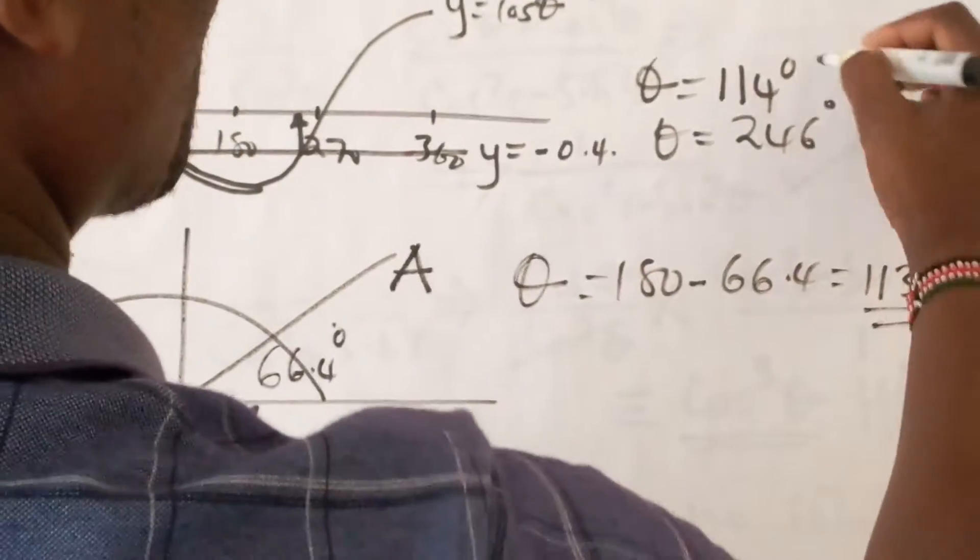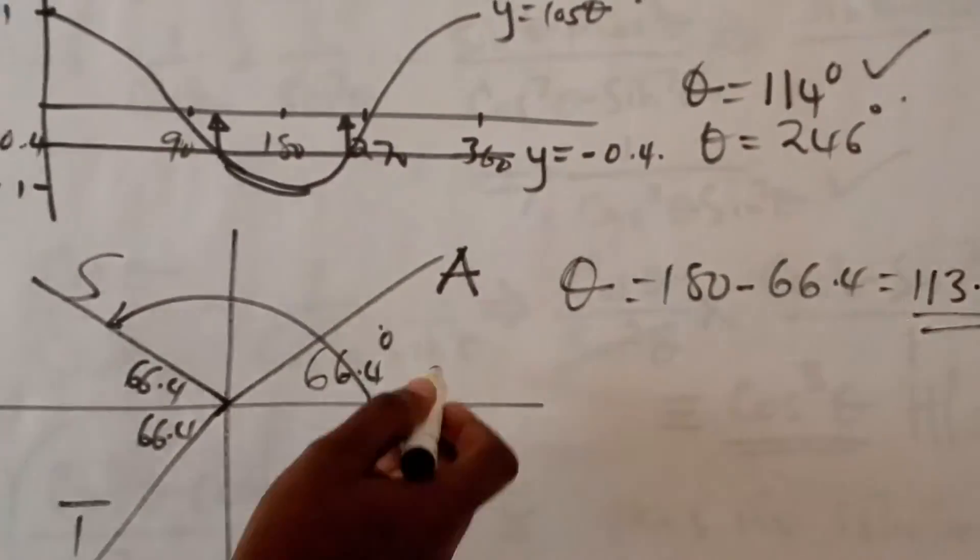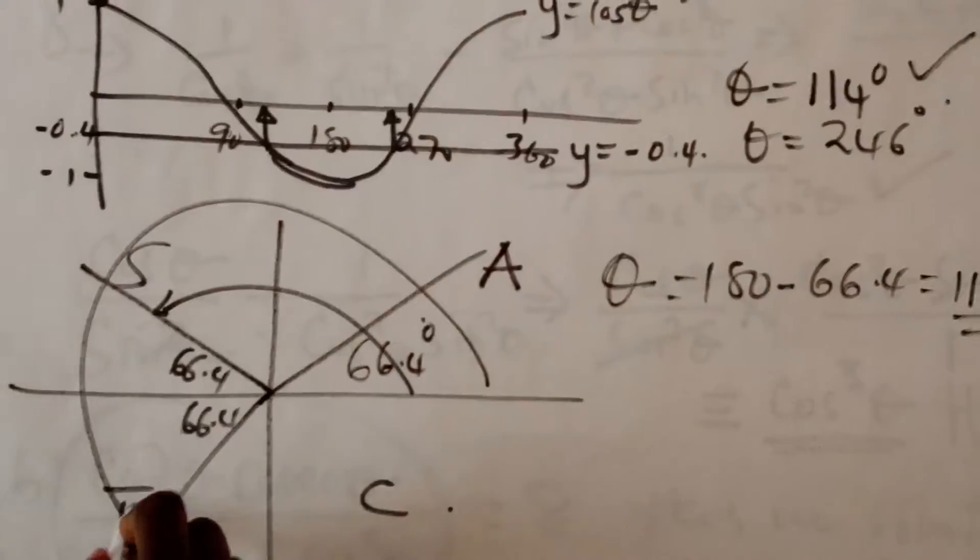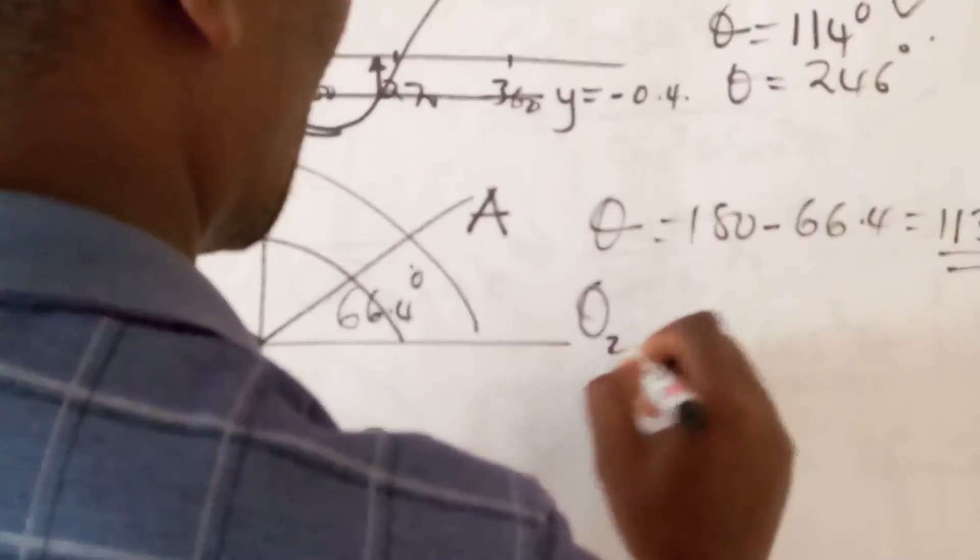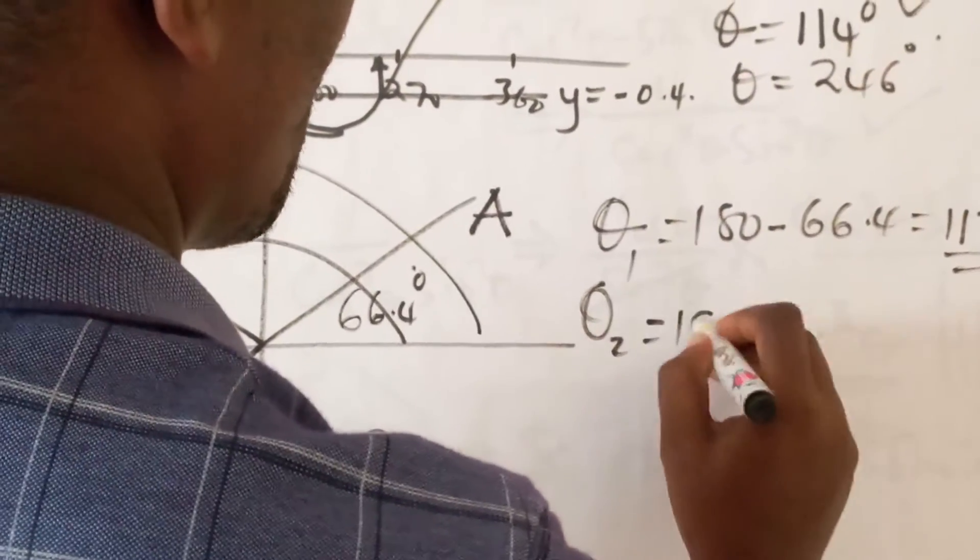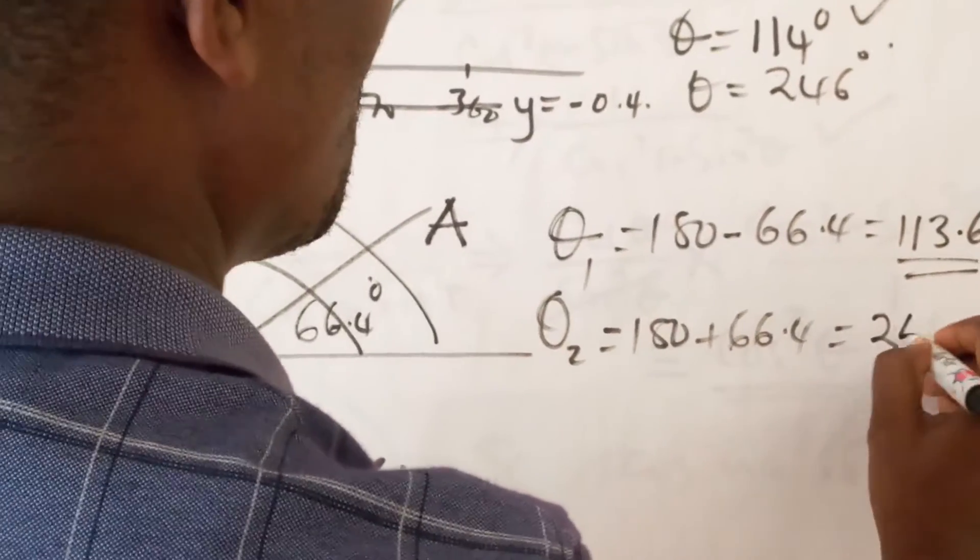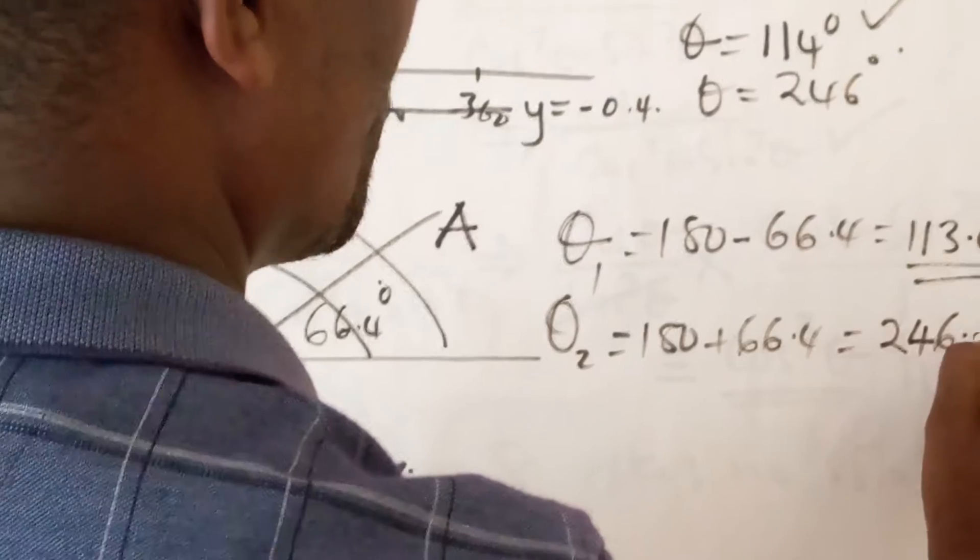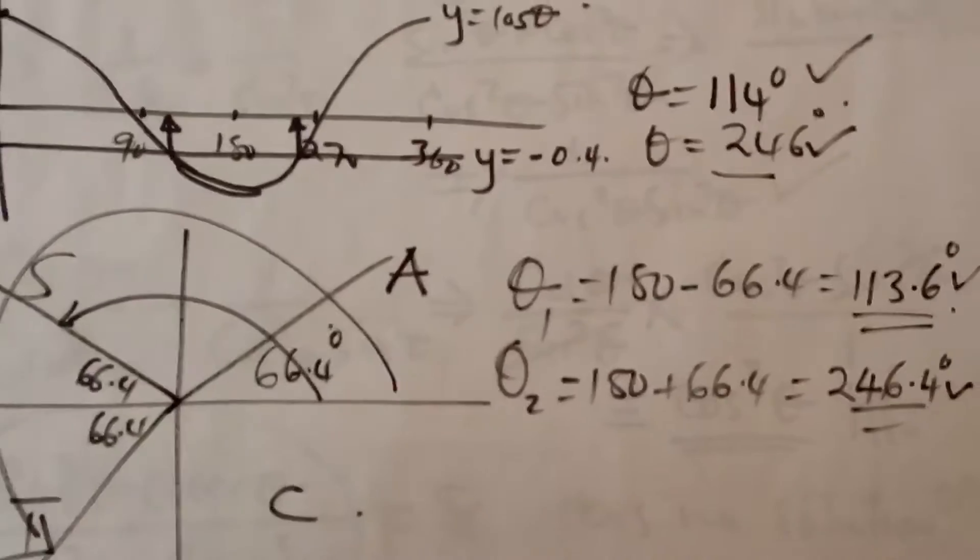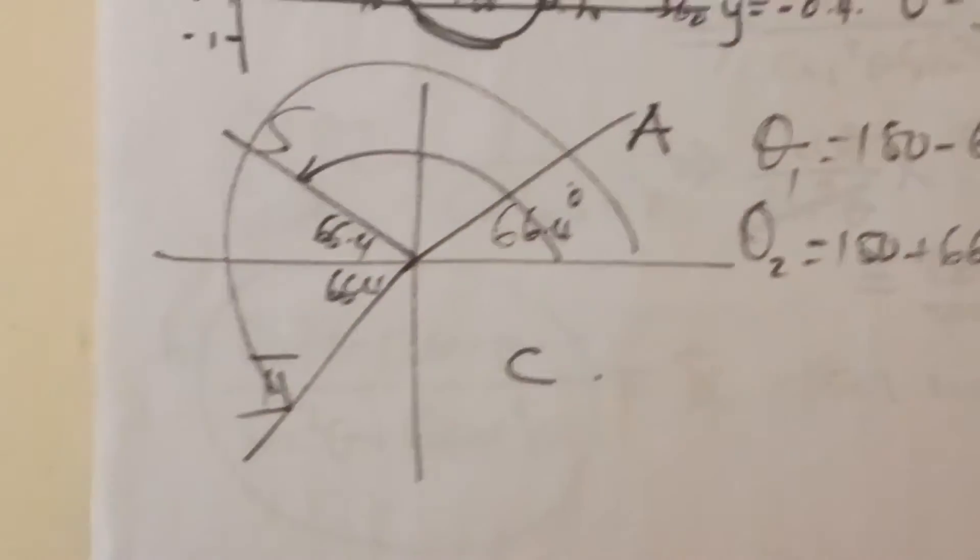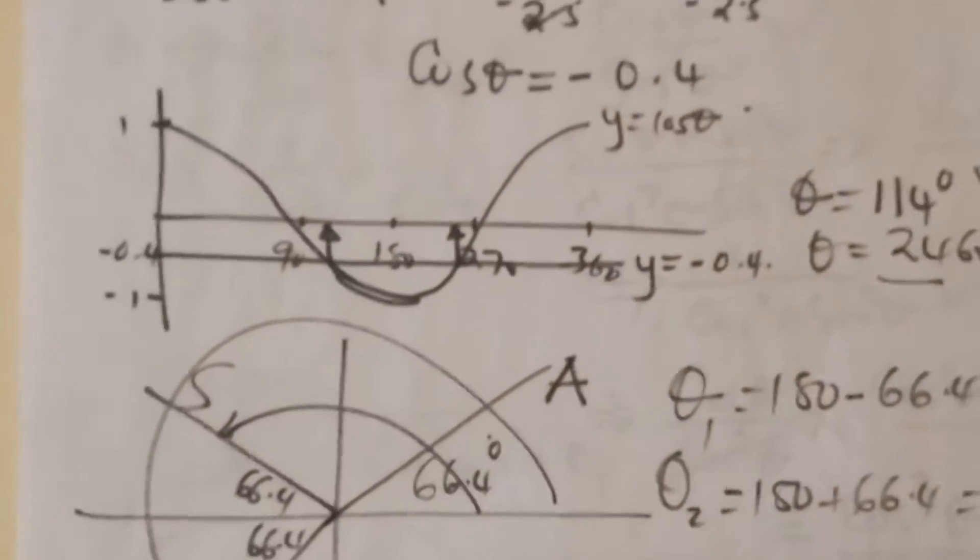That is the possible value of theta. You can see we have a lot of agreement there. The second possible value of theta is 180 plus 66.4, which is 246.4 degrees. Again, you can see it has a lot of agreement with that. And that is how we can solve this particular question using two approaches.